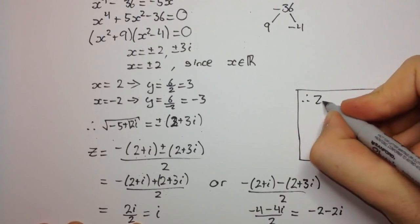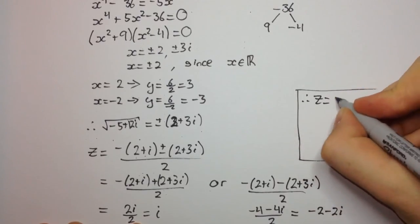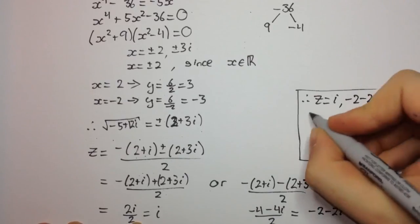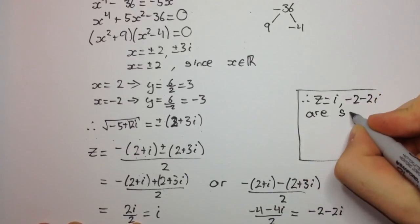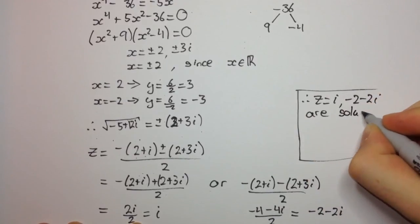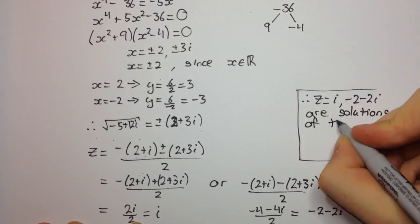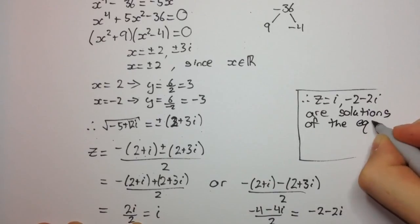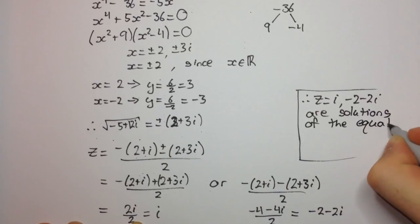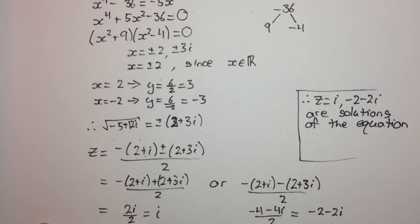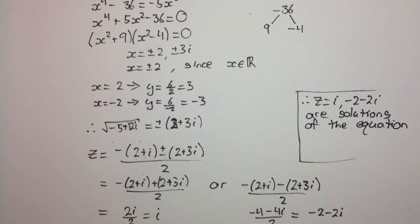Therefore, z equals i and z equals minus 2 minus 2i are the solutions of the equation. And that's your final answer. I hope you enjoyed the video.